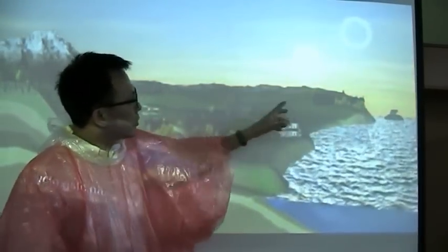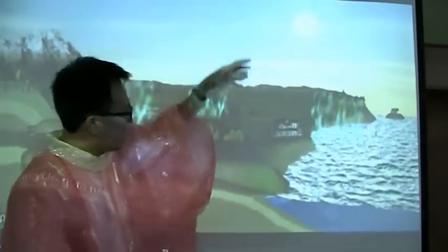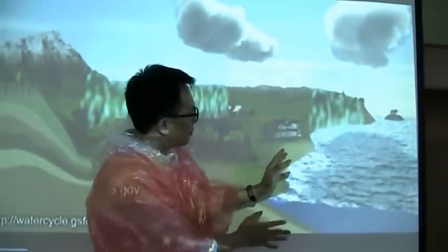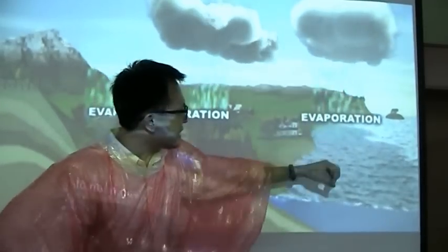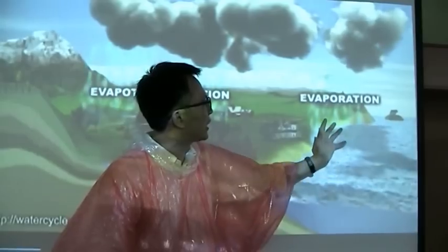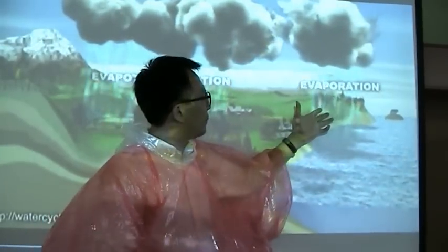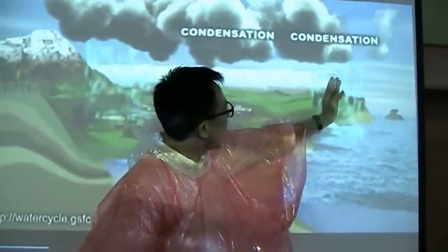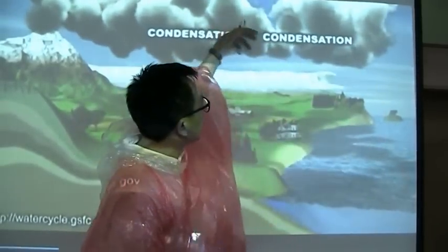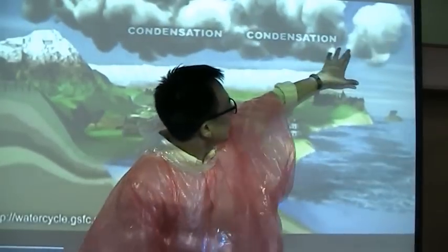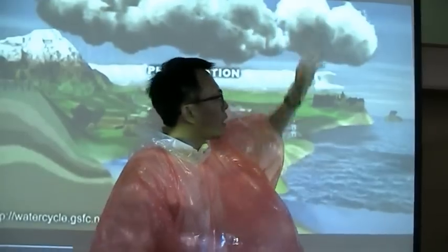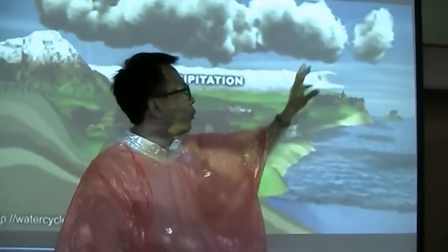First, let's look at the diagram. When the sun heats up the earth and the sea, water gains heat and changes state from liquid to gaseous — basically evaporation occurs. Water turns into water vapor. As the water vapor rises up into the higher atmosphere, it moves to where it gets colder.